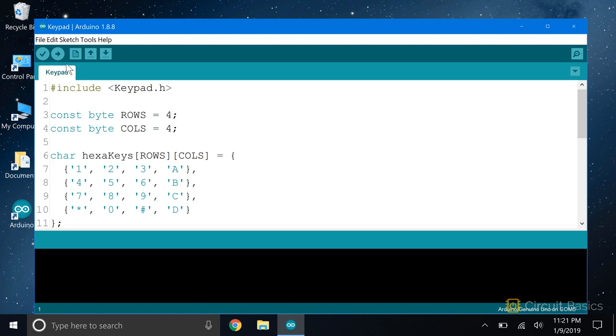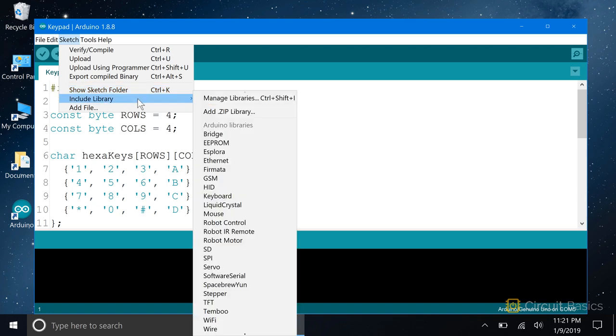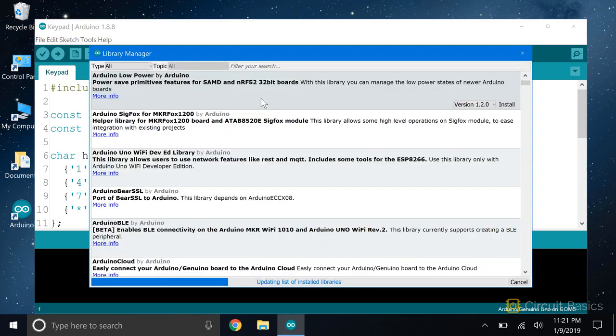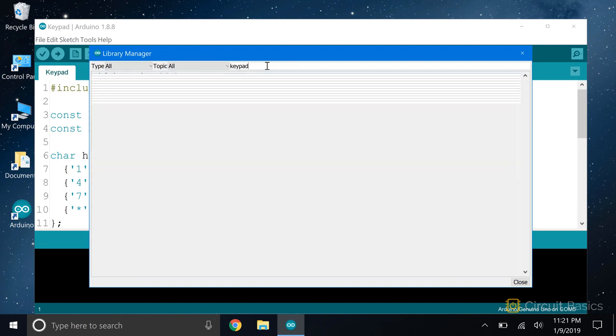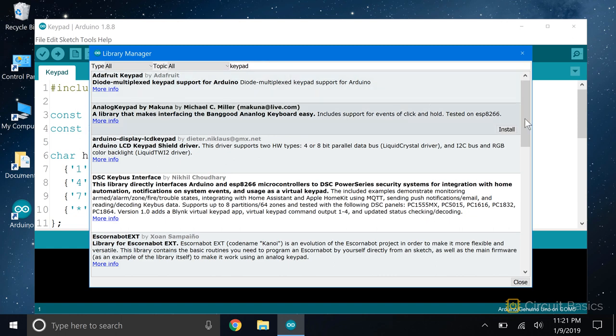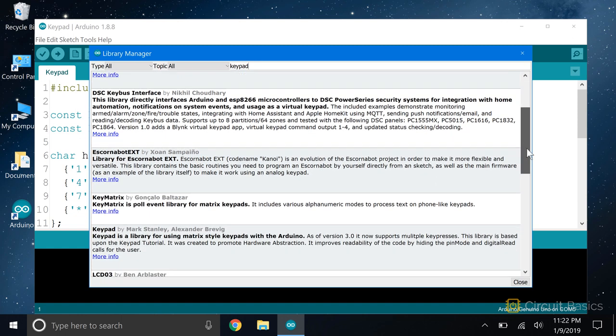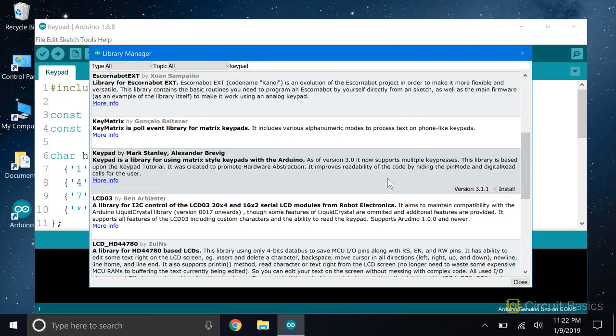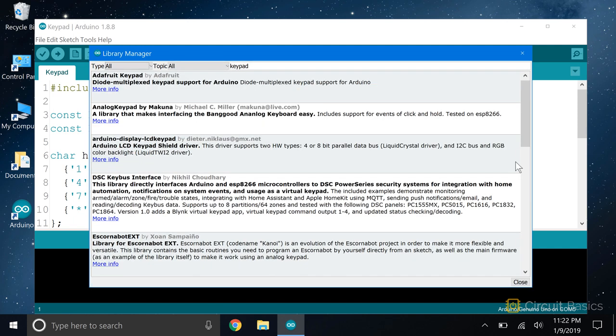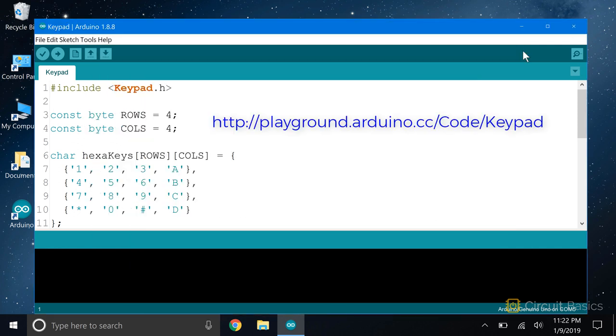To install it, go to Sketch, Include Library, Manage Libraries, and search for keypad. Click on the library, then click install. Or follow this link to install it manually. That web page also has more information about the library and other functions you can use.